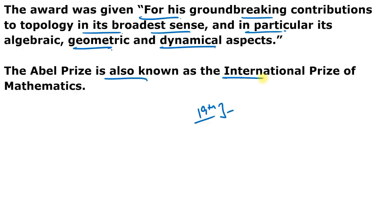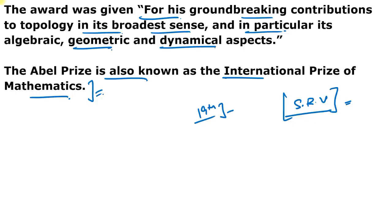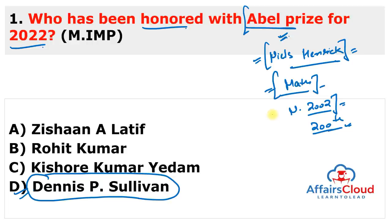The Abel Prize is also known as the International Prize of Mathematics or Nobel Prize in the field of mathematics. In 2007, Indian-American mathematician Srinivasa S.R. Varadhan was awarded the Abel Prize for his contribution in probability theory, particularly for creating a unified theory of large deviations. The prize is given by the Norwegian Academy of Science and Letters. This year, the award goes to Dennis P. Sullivan, who belongs to the United States of America.